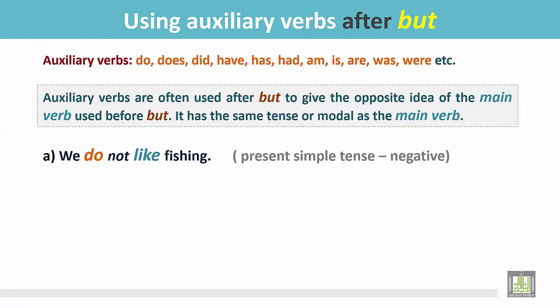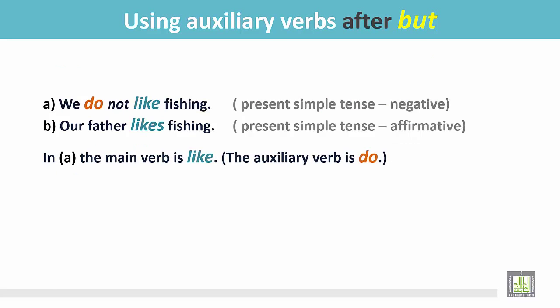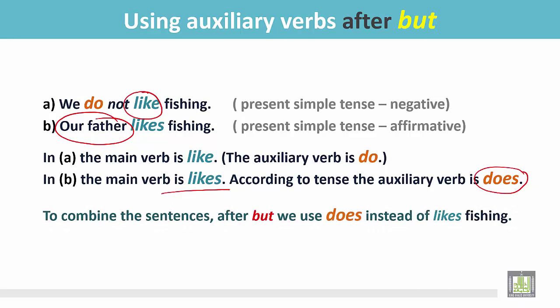Here is an example. 'We do not like fishing' — this is in the present simple, negative. 'Our father likes fishing' — this is also in the present simple, affirmative. In sentence A the main verb is 'like', and in sentence B there is also the main verb 'likes' according to the person. But according to the tense, the auxiliary verb is 'does'.